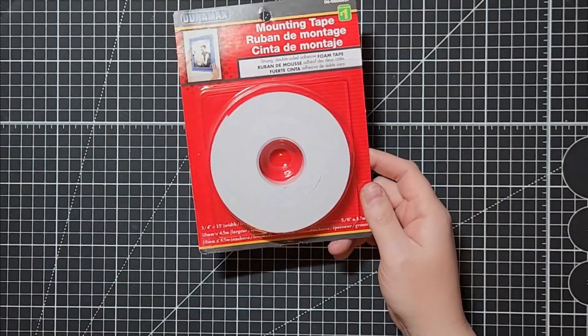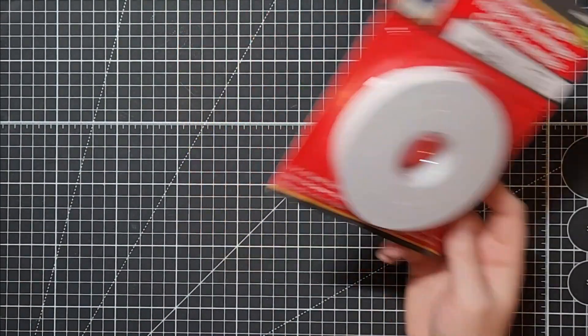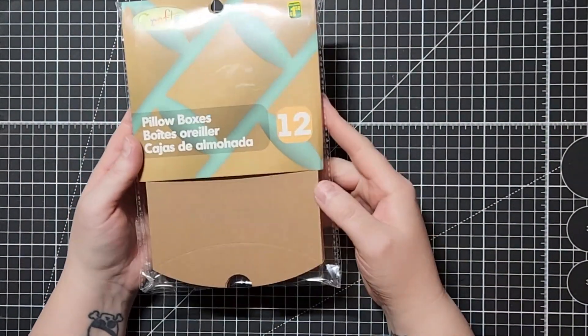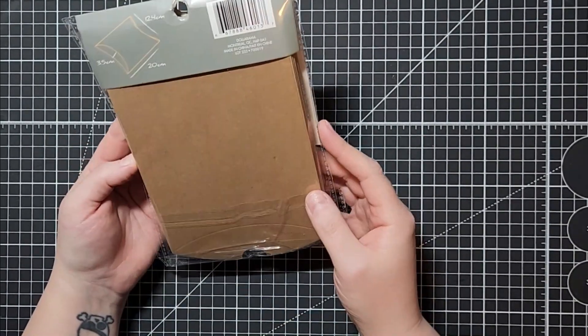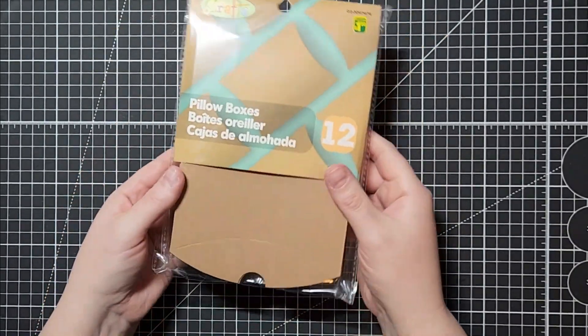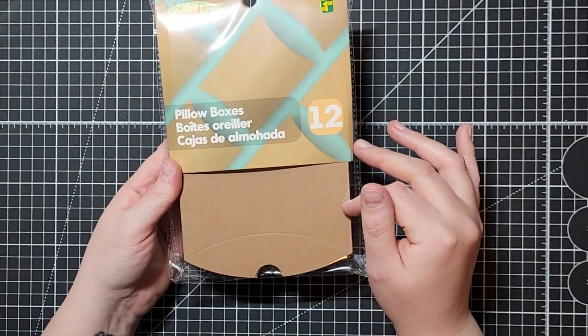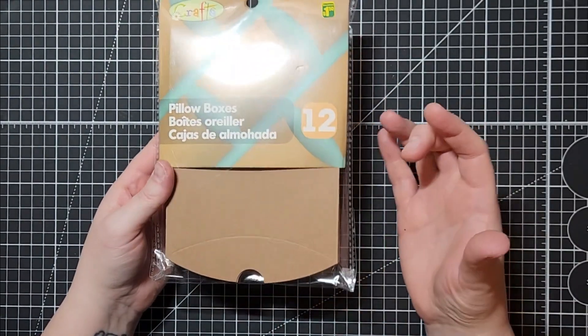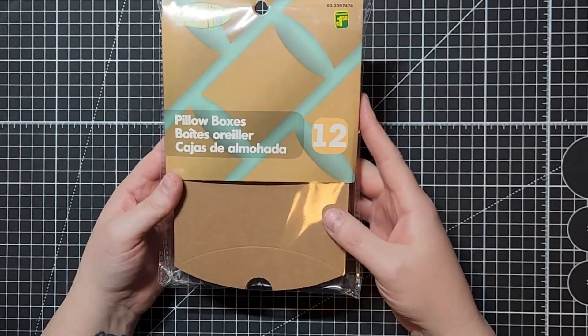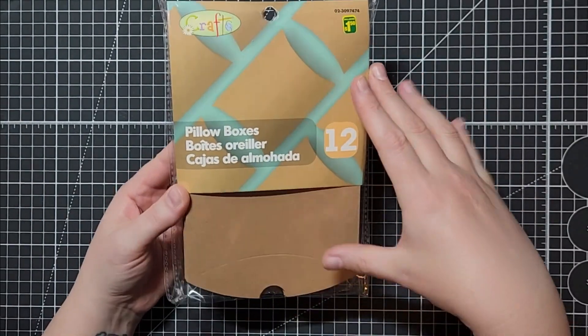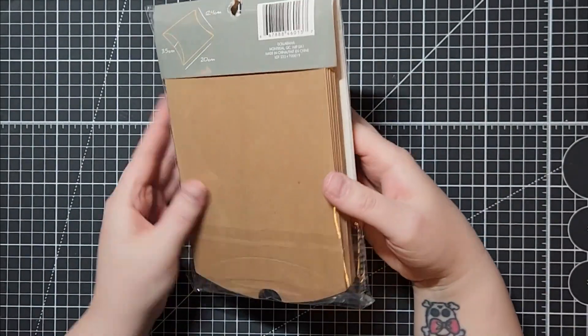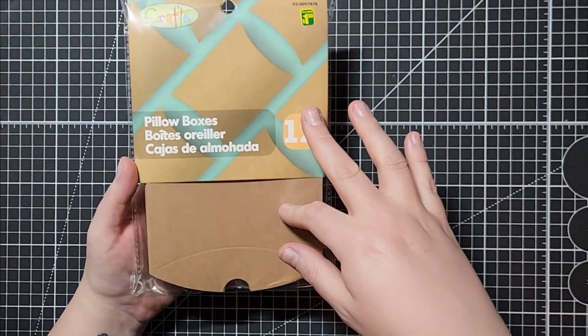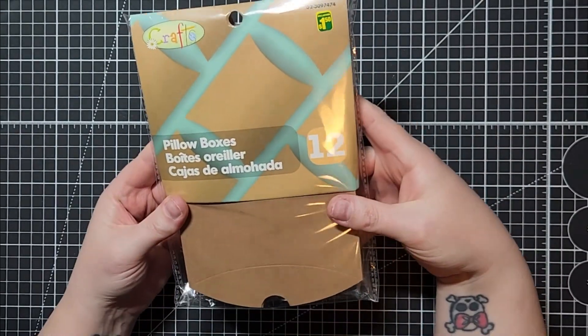But this for like a dollar for 15 feet is great and you can use it for multiple shaker cards if you want to just keep it budget friendly. These are something else I actually found in the crafting aisle. These are pillow boxes, they were a dollar 25 for 12 of them. They're made with craft paper and you can use them to put little trinkets in them. I thought they were kind of cool because you could decorate them and you don't need to make them.